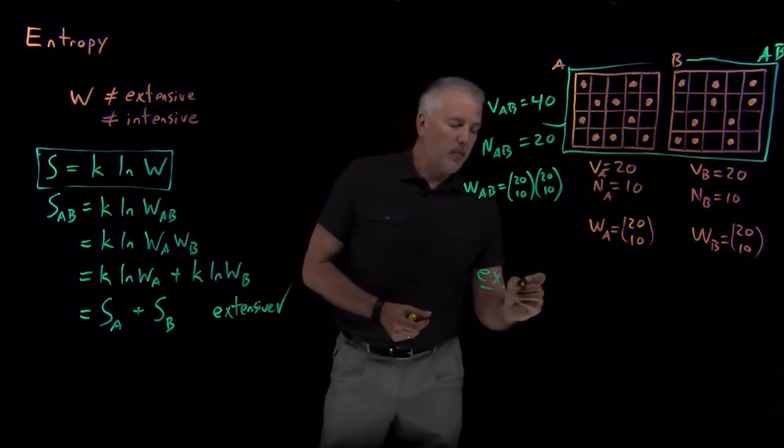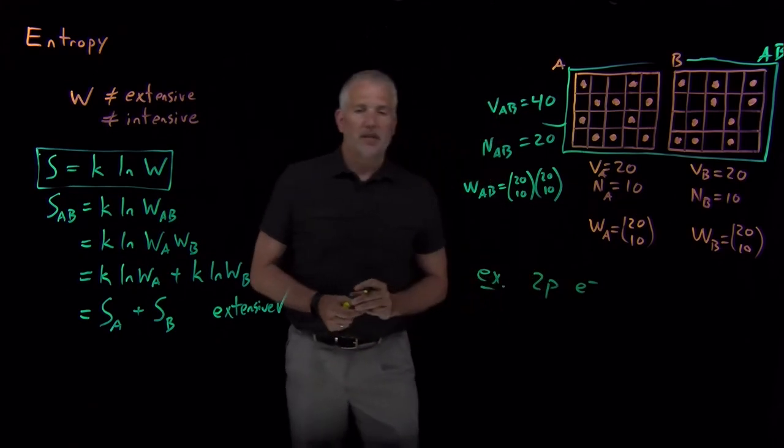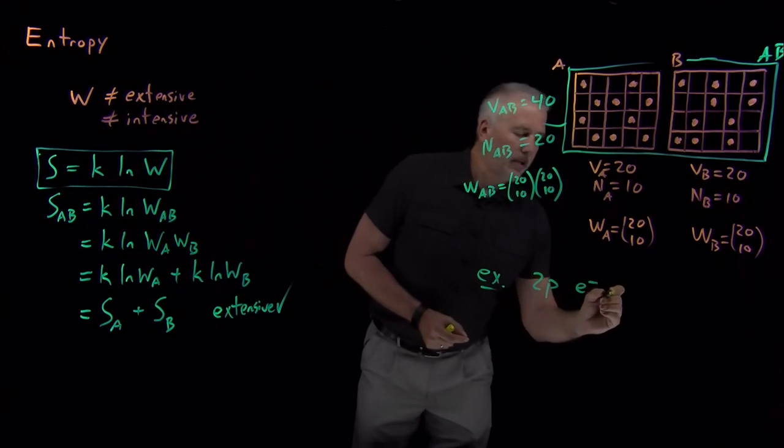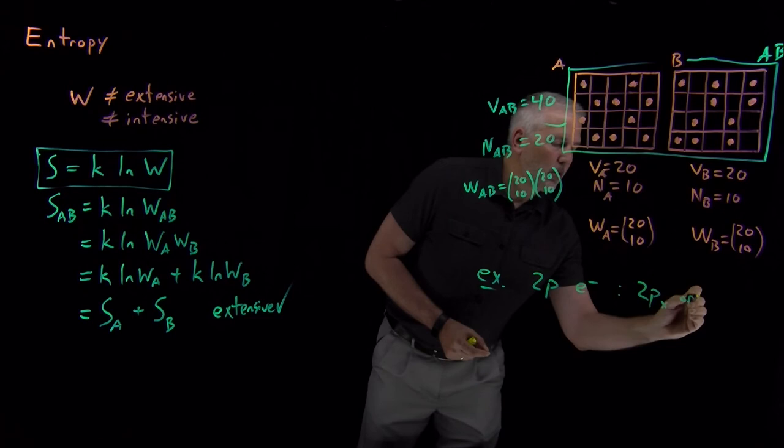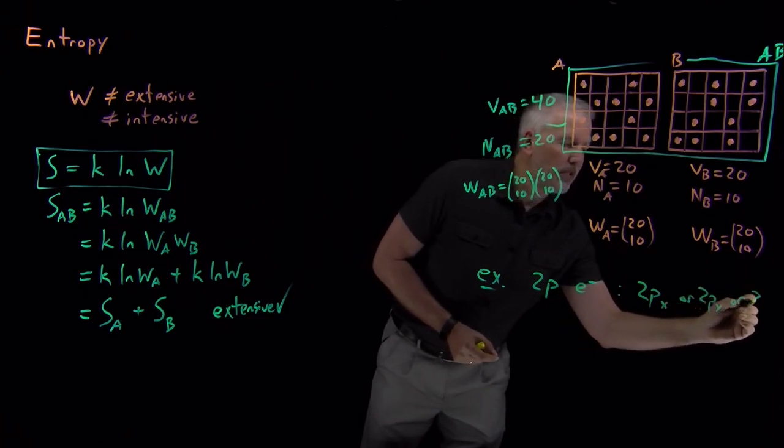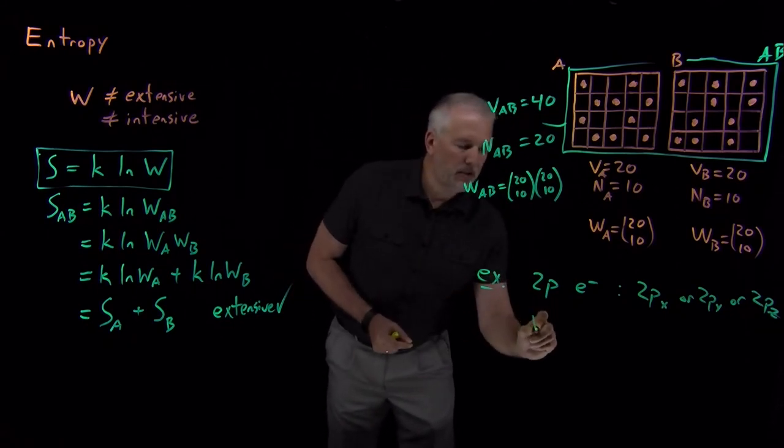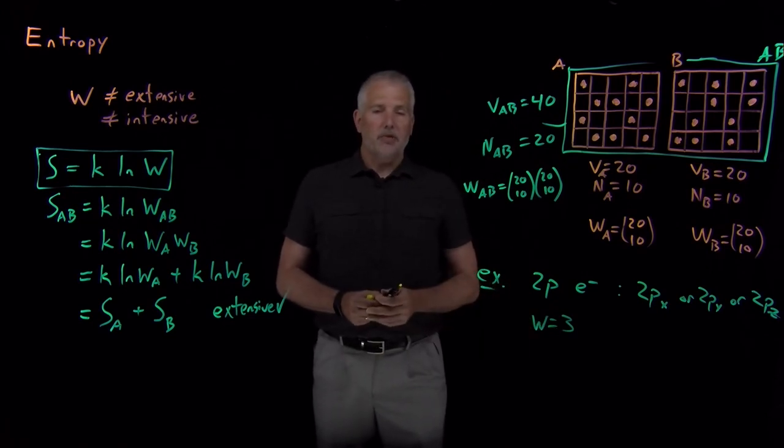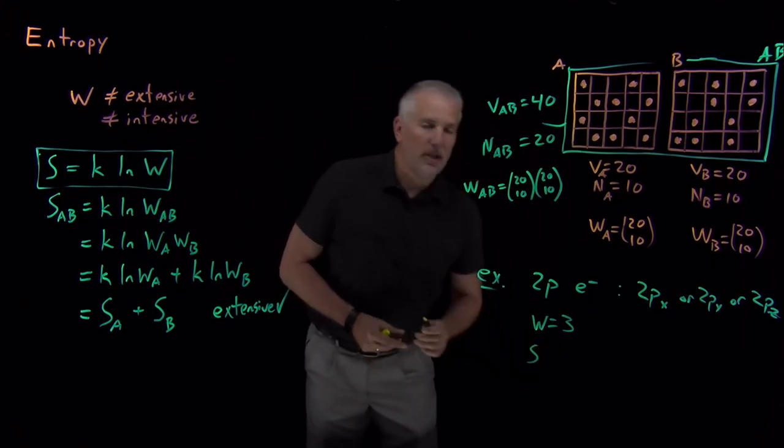And just to give you a small example of how that works using this equation, let's say we have a chemistry problem. Let's say we have an electron that's in the 2p orbital of a hydrogen atom. So we know 2p electrons, they can be in the 2px or the 2py or the 2pz orbital. So there's 3 different possibilities, 3 different equivalent equal energy options for that electron to occupy, 3 different orbitals the electron can occupy, so it has a multiplicity of 3.